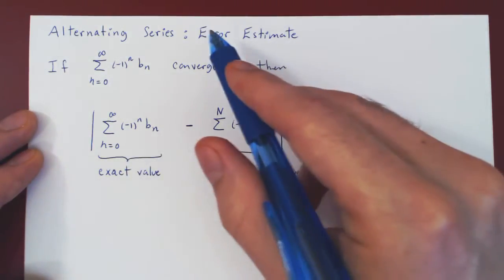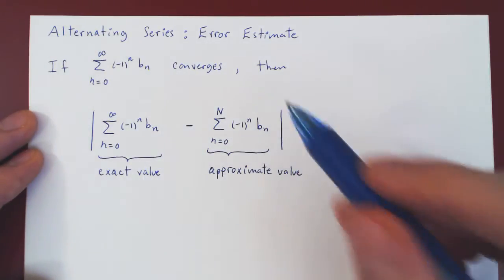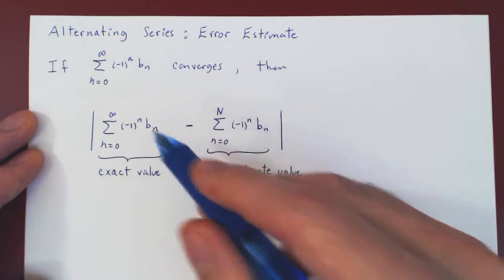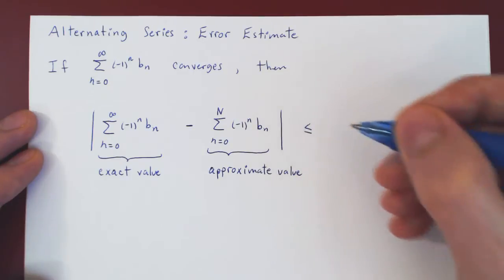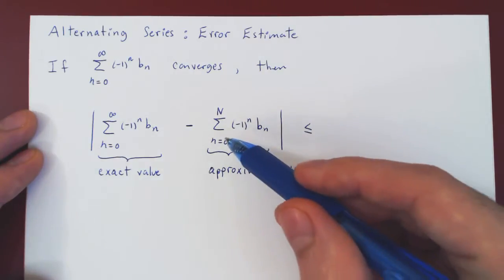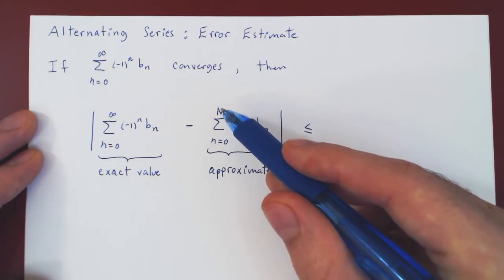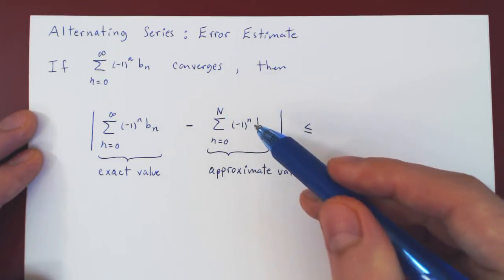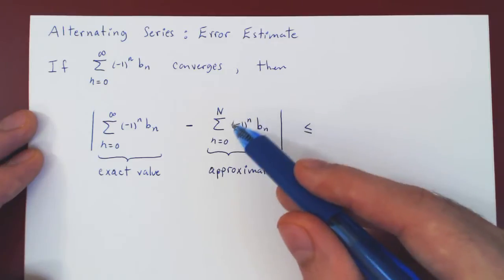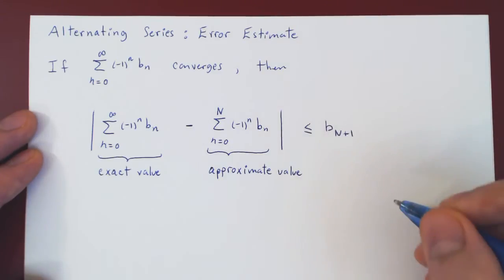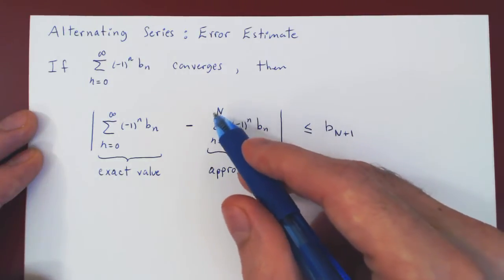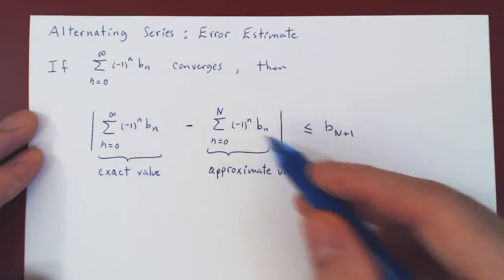And what's nice is the error estimate. How big can the difference be in the absolute value between the exact value of the series and an approximate value of the series is remarkably simple. It is bounded above, therefore at most, the size of the first omitted term. So here we're summing up to uppercase N. Well, the first term we omit is when lowercase n is uppercase N plus 1. And that's it. The key point is this is the first omitted term. So if this was 5, this would be 6, if this was 13, this would be 14, and so forth.